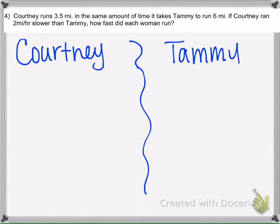In this problem we have Courtney, she runs 3.5 miles, so her total distance is 3.5 miles. In the same amount of time it takes Tammy to run six miles.